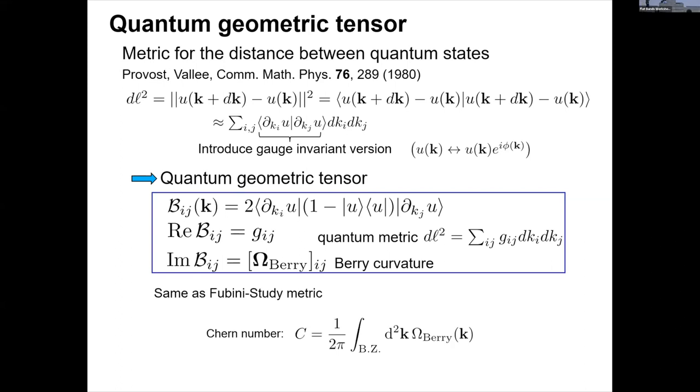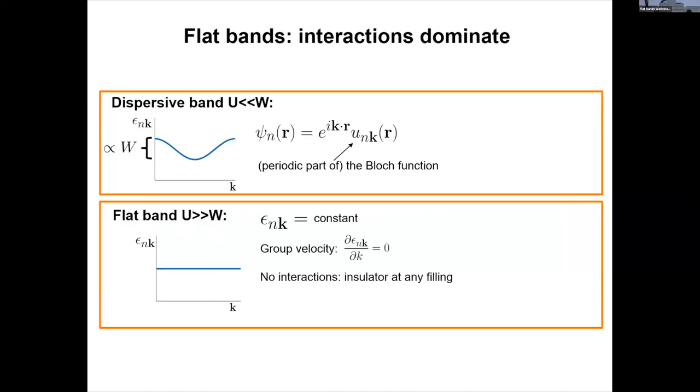then comes out this so-called quantum geometric tensor whose real part is the quantum metric and imaginary part is Berry curvature. And this was introduced long time ago, but even longer time ago, this concept. This one was actually mathematically defined. That was already in 1904 or something. And obviously this is related to topology because you can integrate the Berry curvature and get the Chern number.